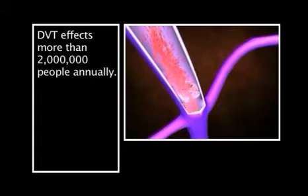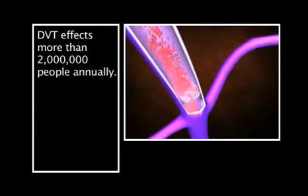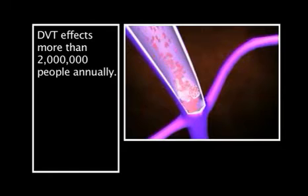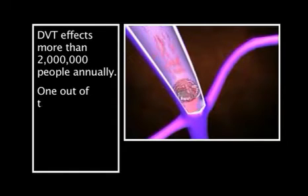Patients get deep vein thrombosis, which is blood clots in the deep veins of the leg, and that can cause problems by obstructing blood flow, so the leg swells up. It can also cause a problem where the clots break off and go into the lungs, causing what's called pulmonary embolism.